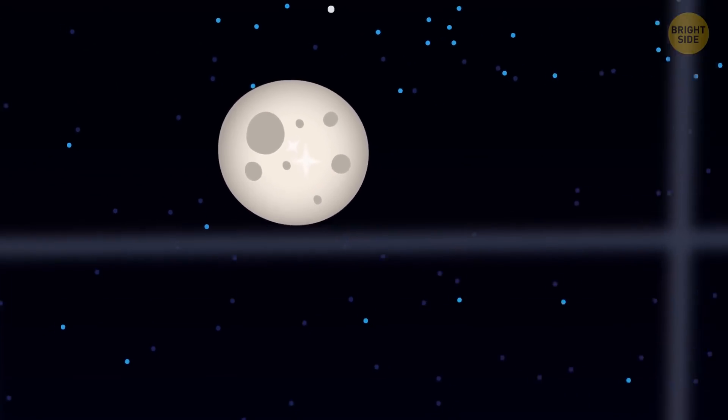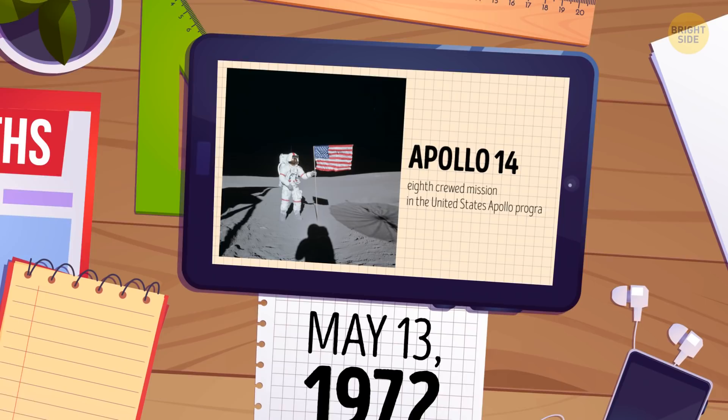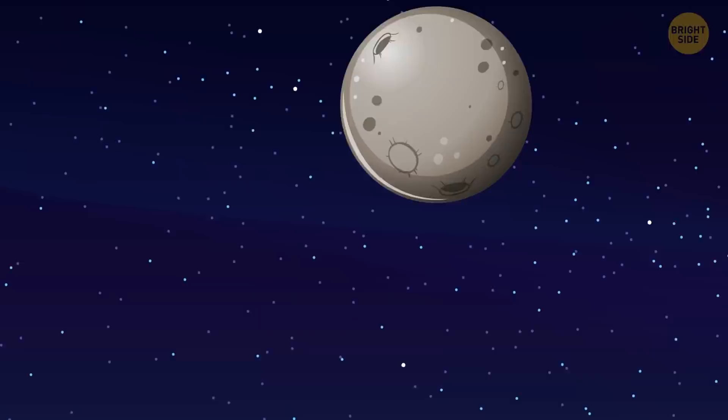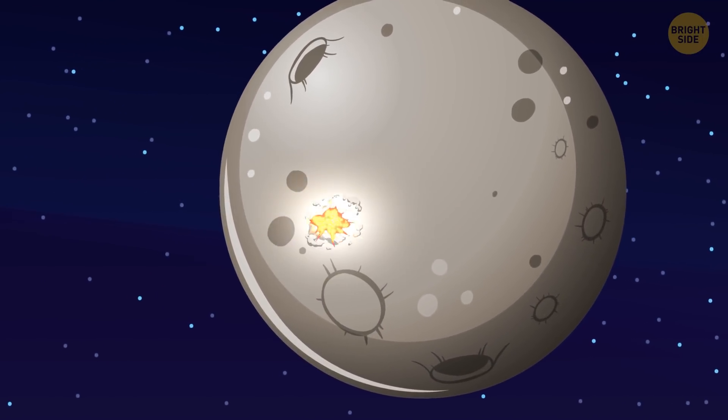And here on Earth, we see it as a starburst. For example, on May 13, 1972, there was a meteorite impact of 1,000 tons of TNT near where Apollo 14 landed.